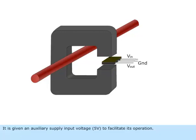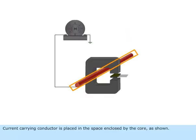It is given an auxiliary supply input voltage of 5 volts to facilitate its operation. Current carrying conductor is placed in the space enclosed by the core as shown.